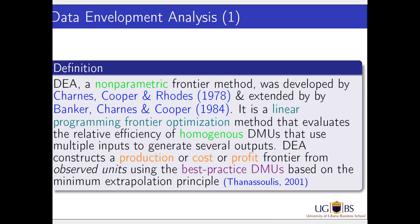The firms must be homogeneous. That means these firms must use similar inputs to produce similar outputs. The inputs must be multiple inputs and the outputs must be multiple outputs, but they must be similar across all DMUs. You can't combine banks and insurance companies because they are not homogeneous. Homogeneity is very essential in DEA efficiency analysis.